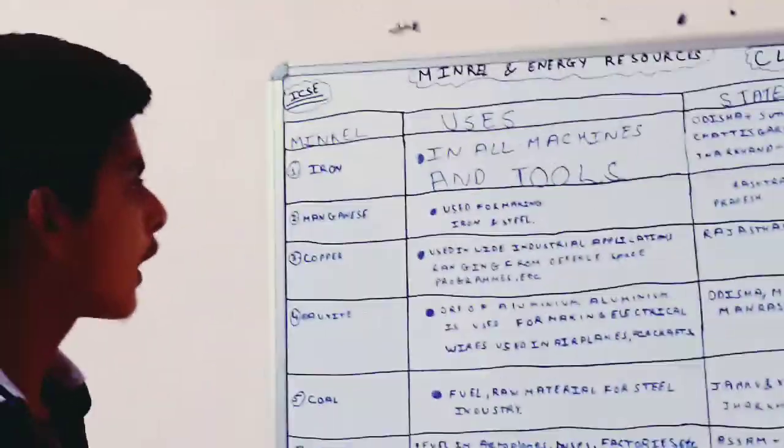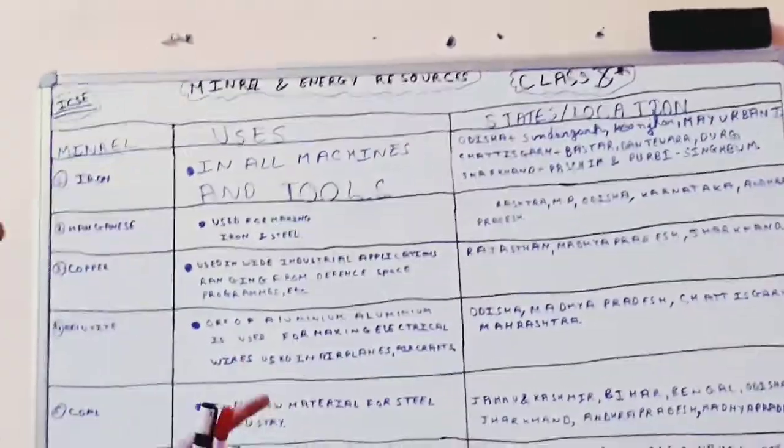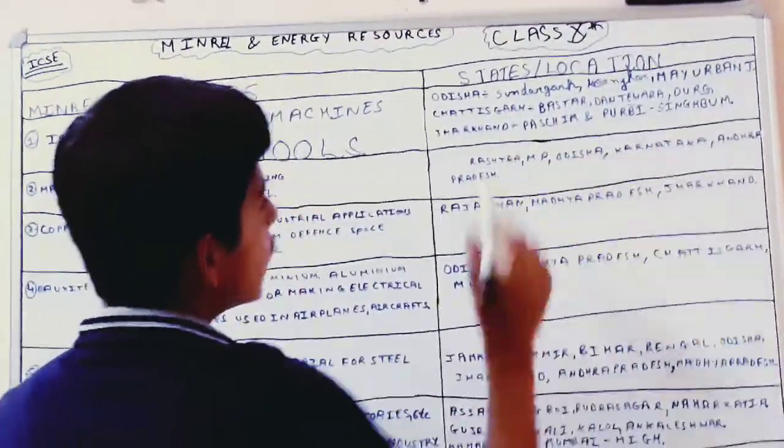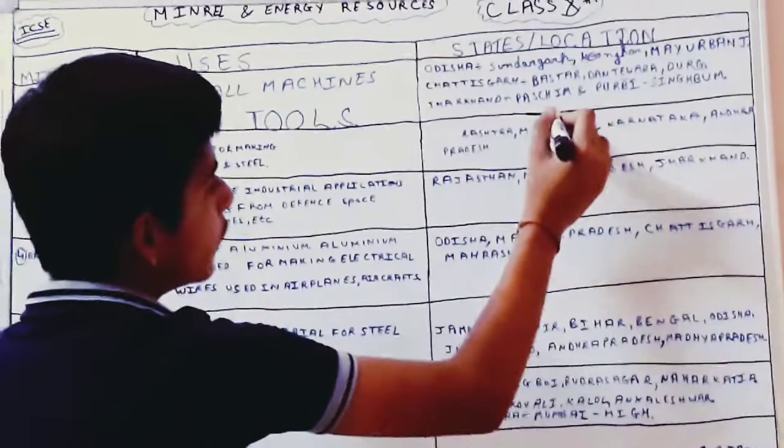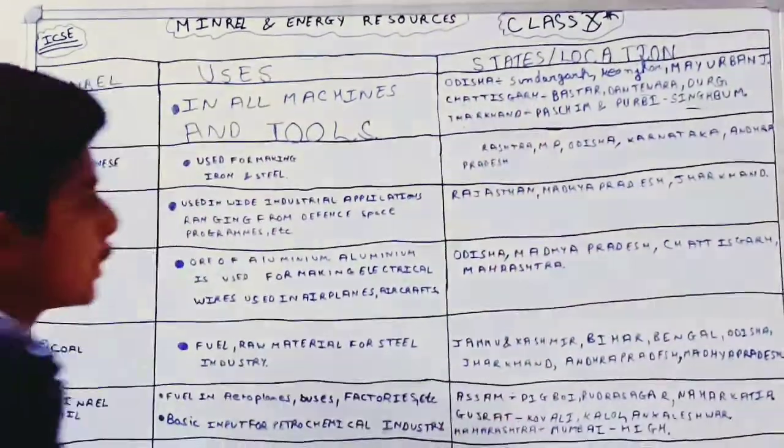Machines and tools mainly use it. States and location: Odisha - Sundargarh, Keonjhar, Mayurbhanj; Chhattisgarh - Bastar, Dantewada, Durg; Jharkhand - Singhbhum and Korpi. Singhbhum in Jharkhand, Odisha, Chhattisgarh are mainly the states where these minerals are found.